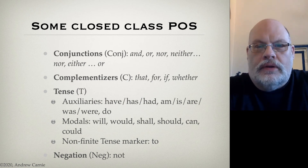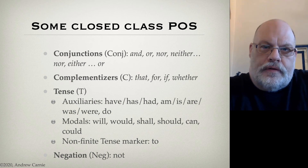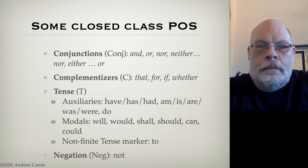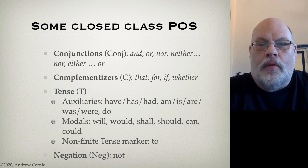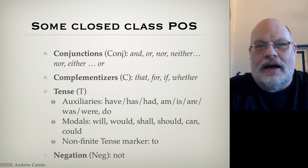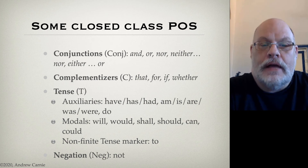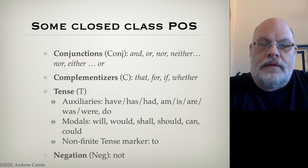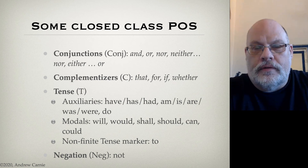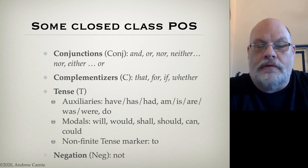This next category will definitely be new to you because it's unique to generative grammar. It's a category we call tense. There are two senses of the word tense. One is about time — past, future, present. That's not what we're talking about here. This is a category about words that can indicate the morphological or semantic tense of the phrase. I'm not talking about -ed suffixes or -s suffixes, the tense suffixes of English. I'm talking about individual words — typically auxiliaries or modals, and one special one: the non-finite tense marker "to."